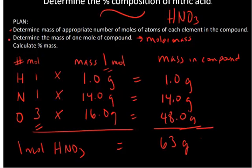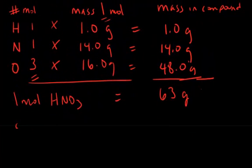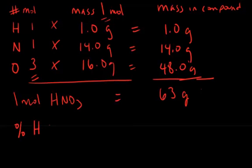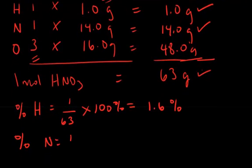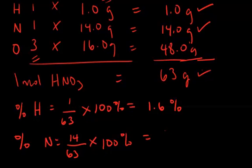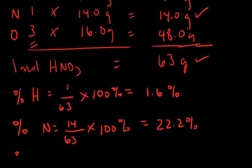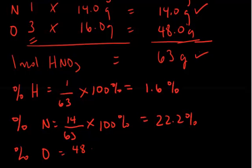Now we calculate the percent mass. The percent by mass of hydrogen in the compound is 1 gram (the part) divided by 63 grams (the whole) — the gram units cancel — times 100%, which equals 1.6% by mass of hydrogen. The percent of nitrogen is 14 grams divided by 63 grams times 100%, which equals 22.2%. And the percent oxygen is 48 grams in one mole of the compound divided by 63 grams times 100%, which equals 76.2%.